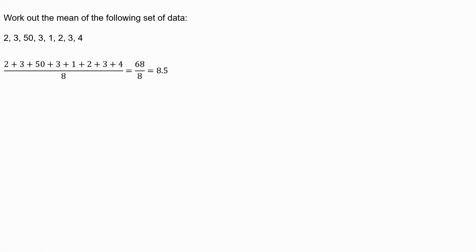If I want to work out the mean of this set of data, 2, 30, 50, 3, 1, 2, 3, and 4, we end up with 8.5. But if you look at the data, most of, in fact, almost all of the values are below 8.5. So it's really hard, it's not really fair to say that 8.5 represents that data.